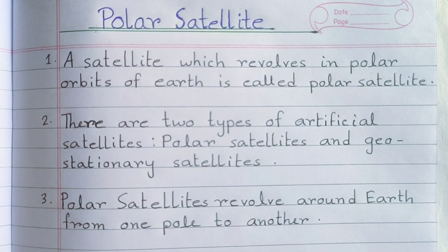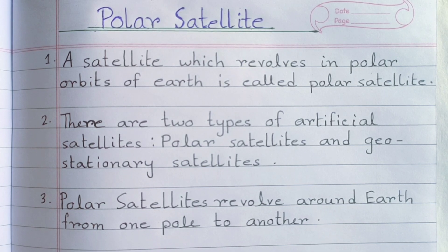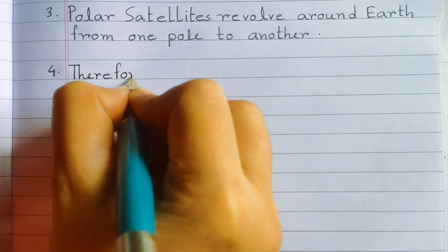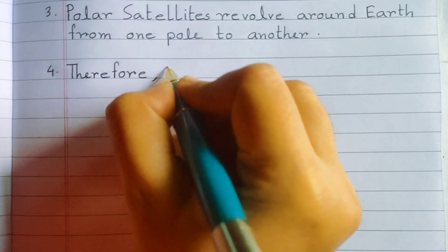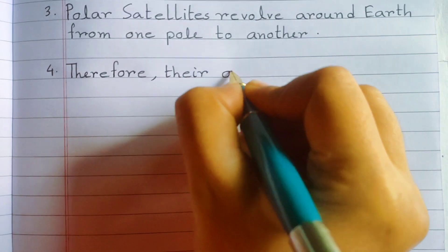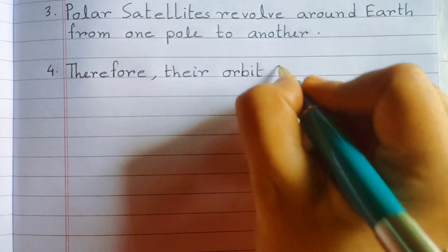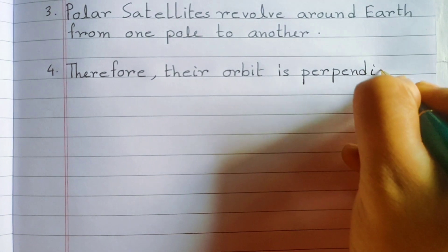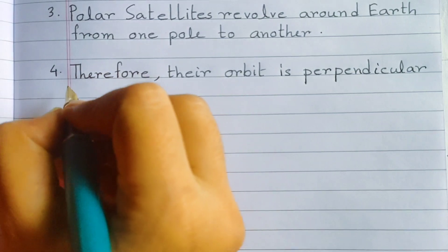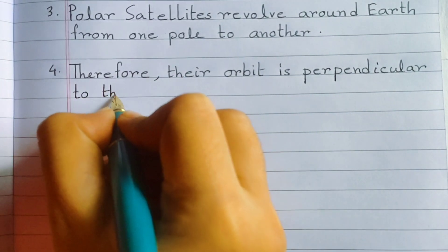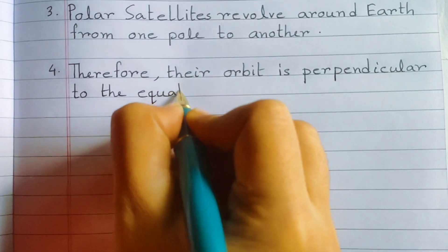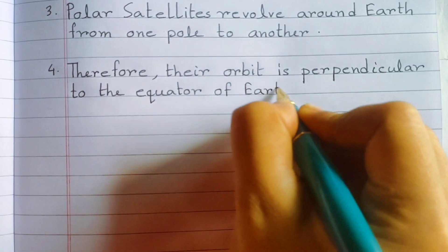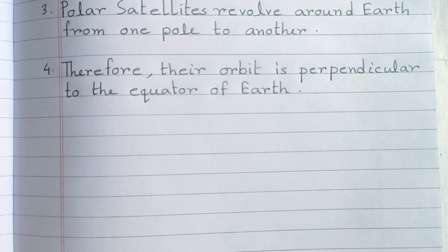Polar Satellites revolve around Earth from one pole to another. Therefore, their orbit is perpendicular to the equator of Earth.